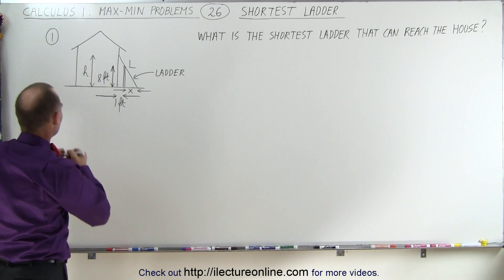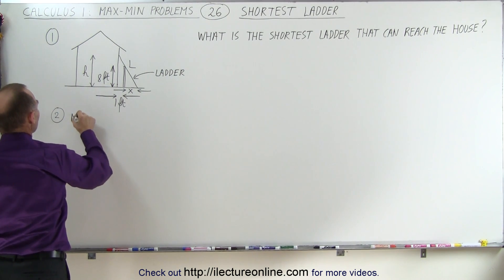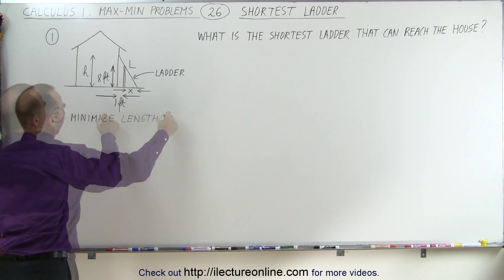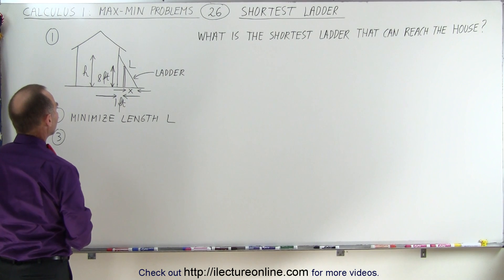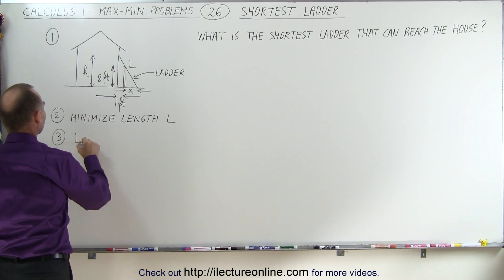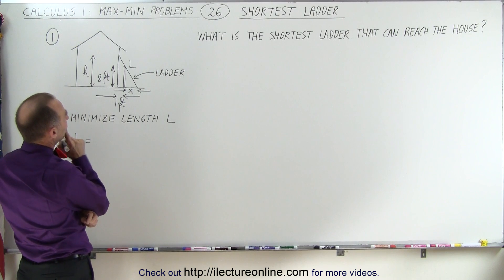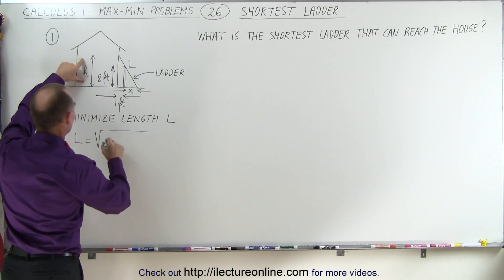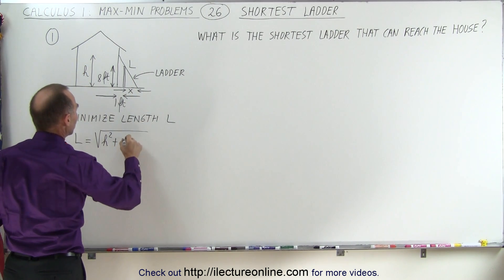We need to determine what's being maximized or minimized. In this case, we're trying to minimize the length of the ladder. So we need to find an equation for L. Using the Pythagorean theorem, we can say L is equal to the square root of the height squared plus this distance here, which would be (x + 1) squared.